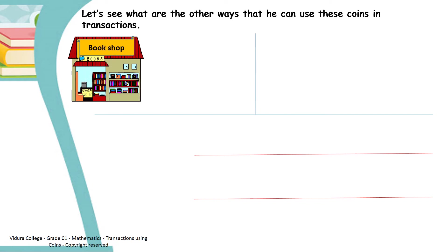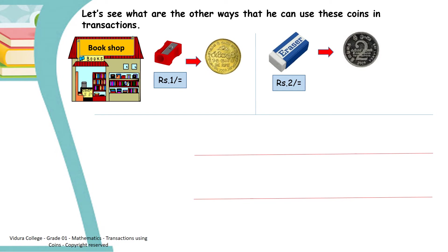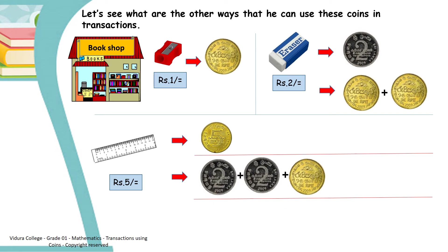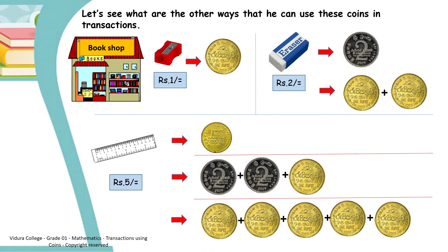Let's see what other ways he can use these coins in transactions. To buy a sharpener, he can use a 1 rupee coin. And to buy an eraser, he can use a 2 rupees coin, or he can use 2 coins of 1 rupee. To buy a ruler, he can use a 5 rupees coin, or he can use 2 coins of 2 rupees and a 1 rupee coin. There is another way — he can use 5 coins of 1 rupee to buy this ruler.